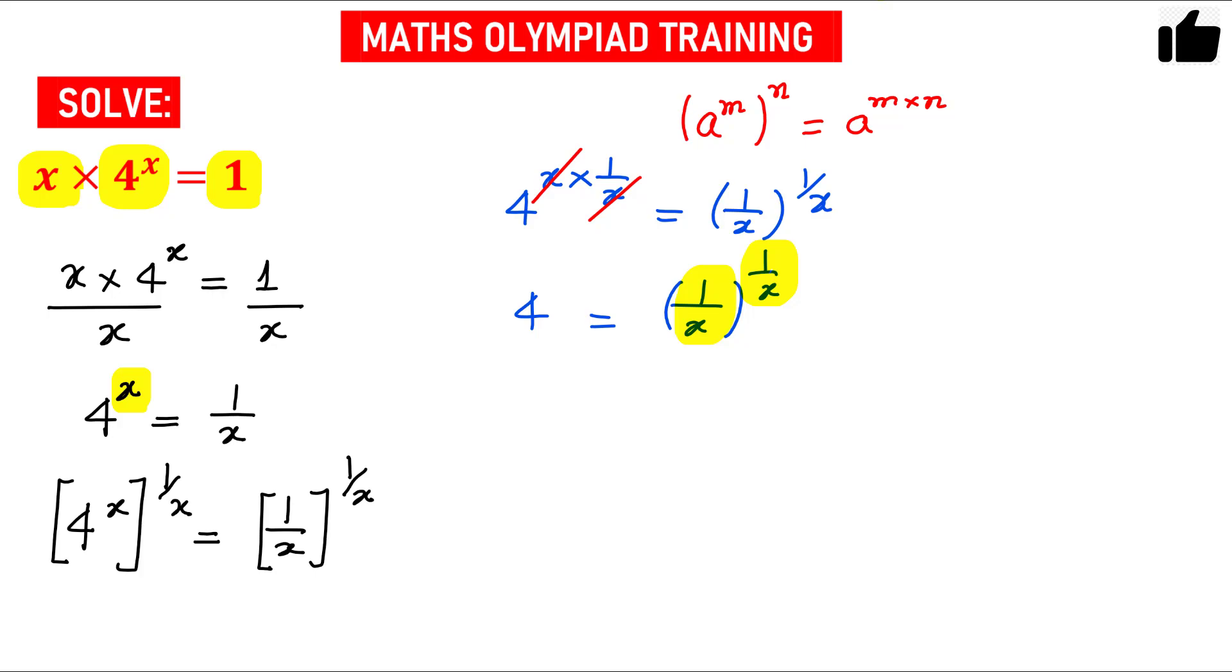So I can convert the left hand side something like this: 2 raised to the power 2, and this is 4. So 1 by x raised to the power 1 by x. So now see, base is the same, 1 by x and here 2. Exponent is the same, that is 1 by x and here 2.